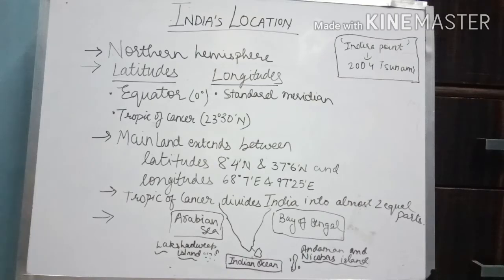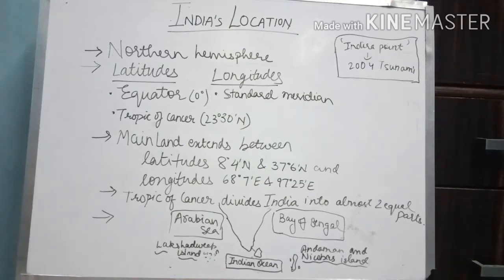The next point is Indra Point. Indra Point was the southernmost point of the Indian Union. However, as we all know, in 2004 there was a tsunami and the entire area was submerged. So now Indra Point is no longer the most southernmost point of India.